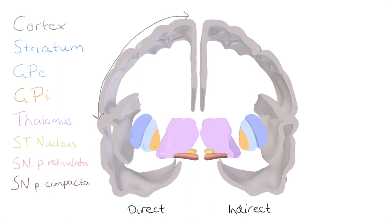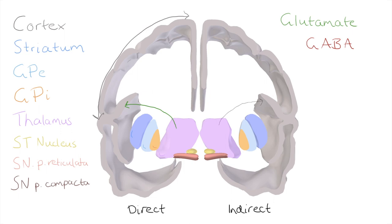When we talk about these pathways, there are two neurotransmitters that enter the discussion: glutamate, which provides an excitatory signal, and GABA, which provides an inhibitory signal. The end result is always excitatory output from the thalamus to the cortex, but the role of these pathways is to modulate the strength of that excitation. The direct pathway increases the level of that excitatory output, so we can think of it as an excitatory pathway. The indirect, on the other hand, reduces the level of that excitatory output, so it's effectively an inhibitory pathway.